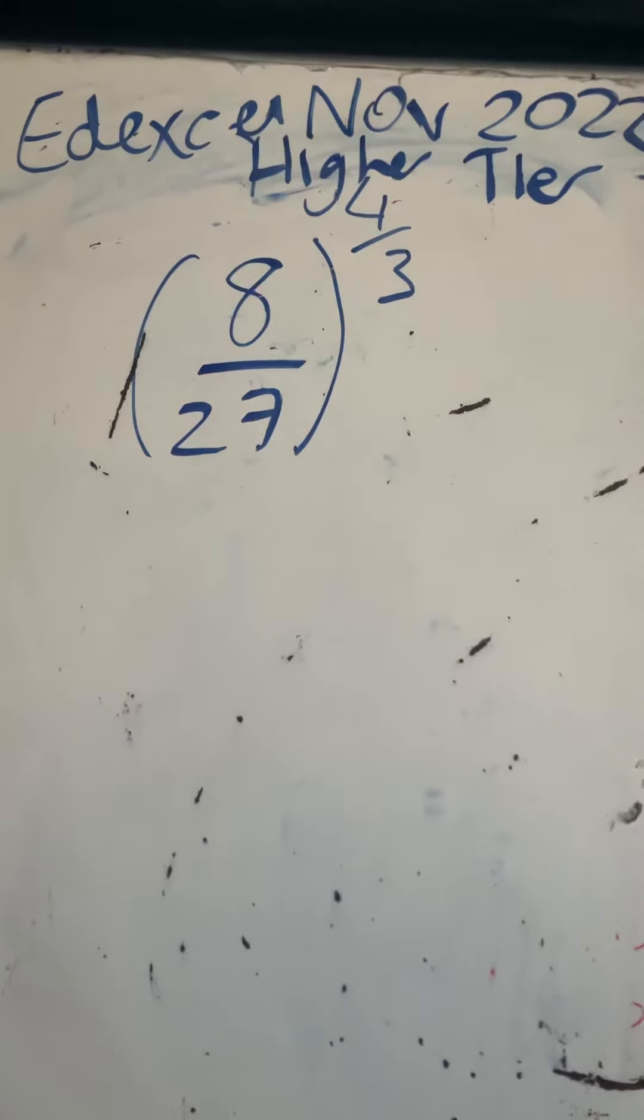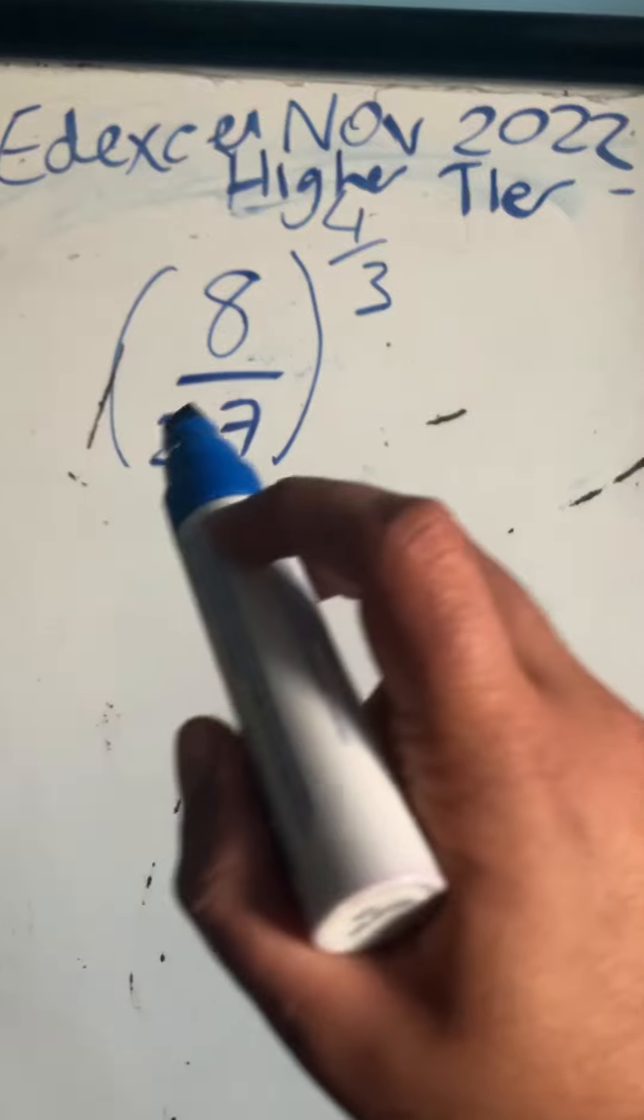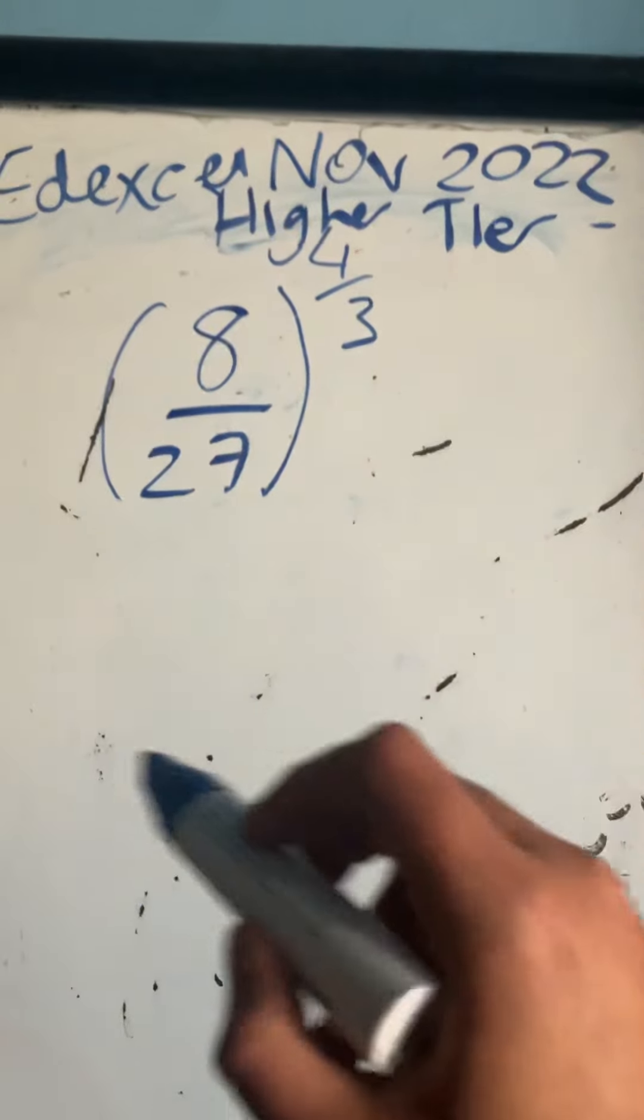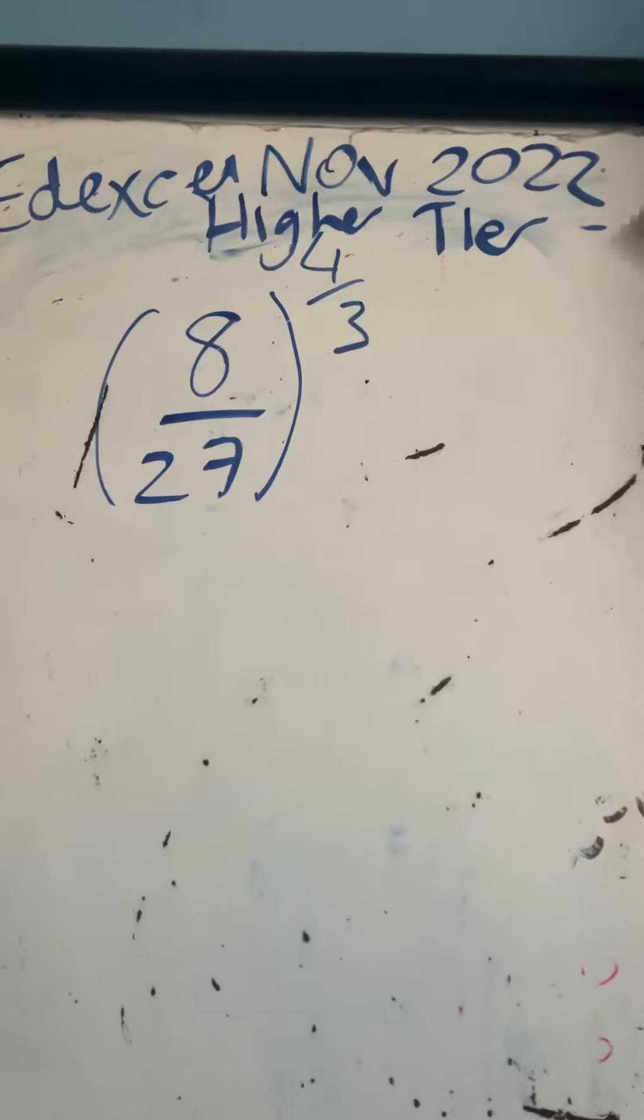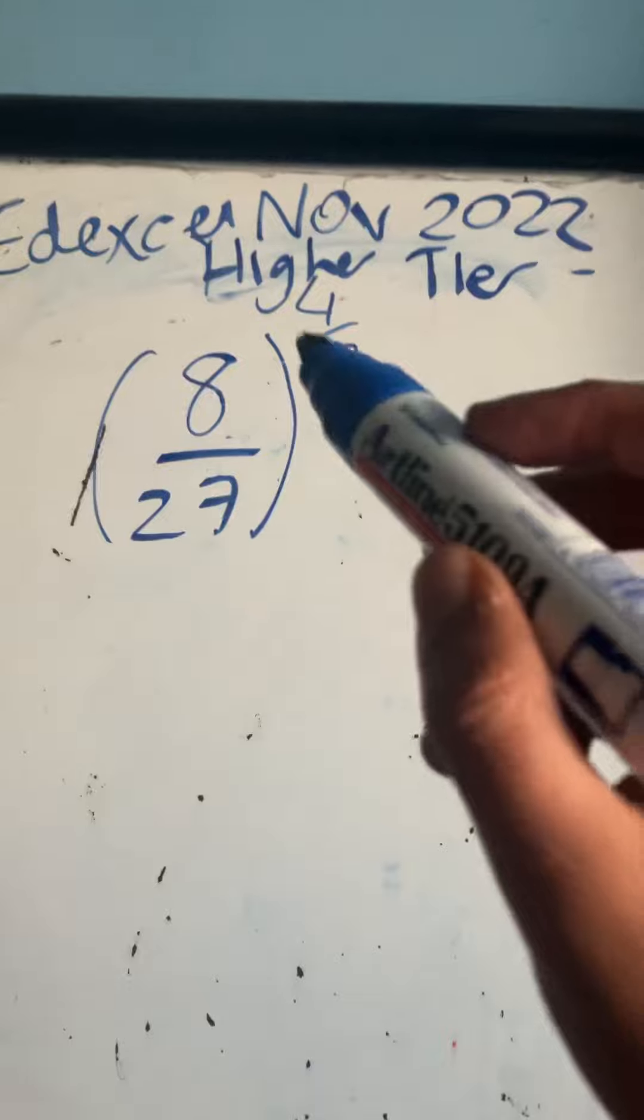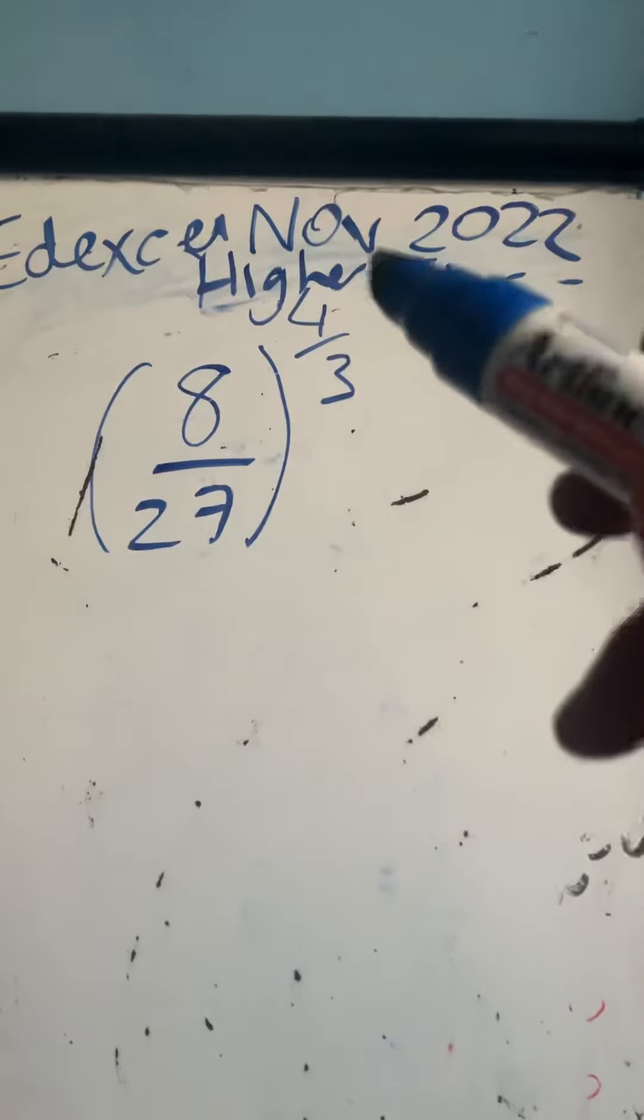Looking at question 17 from the Edexcel November 2022 higher tier paper - a fractional indices problem. This is higher tier only. We're asked to evaluate 8/27 to the power of 4/3.